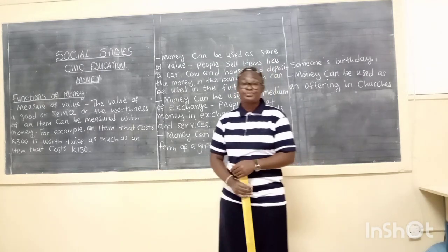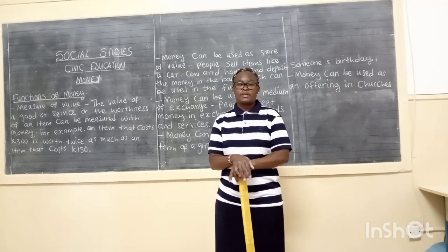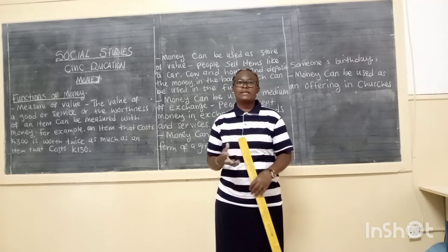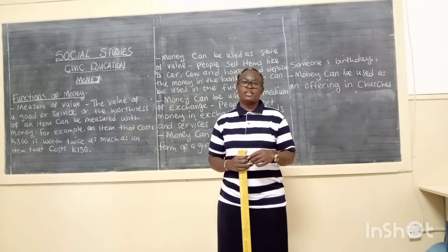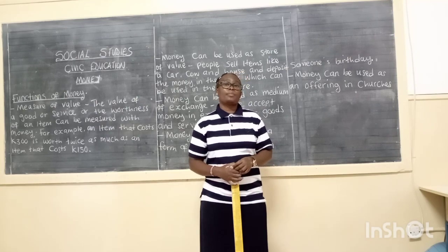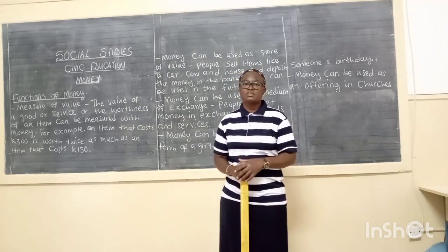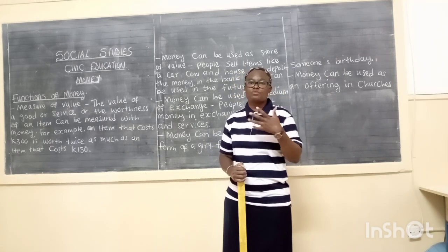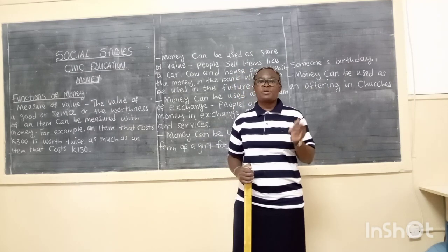Last time we learnt, we talked about the characteristics of good money. But first we defined money. We said that money is anything of value that can be used in the exchange of goods and services. Then we talked about the characteristics of money — one of which is that it should be portable, it should be easy to carry around.